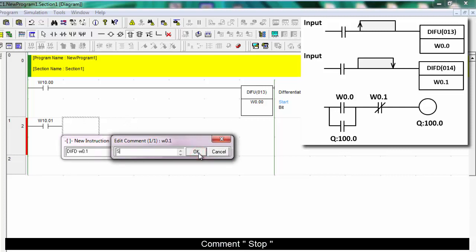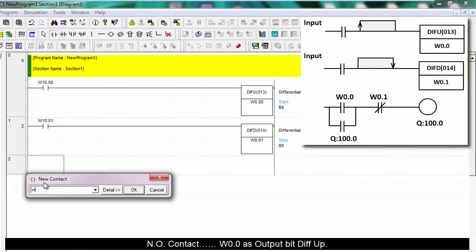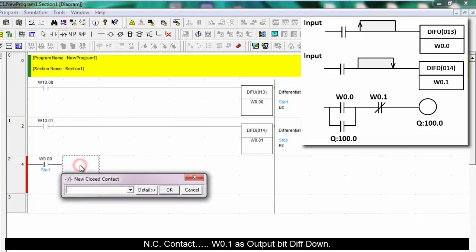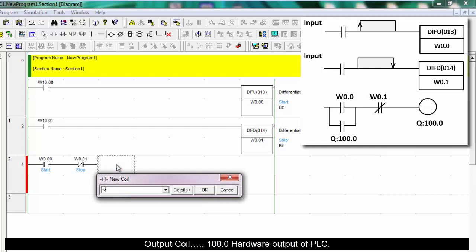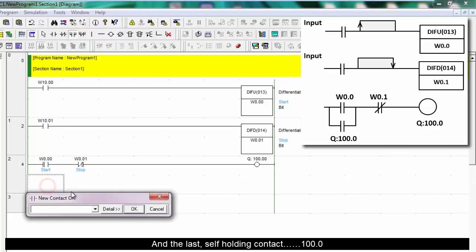Comment stop. NO contact W0.0 as output bit DIFU. NC contact W0.1 as output bit DIFD. Output coil 100.0, hardware output of PLC. And the last, self-holding contact 100.0.